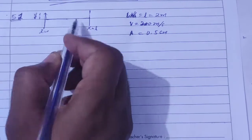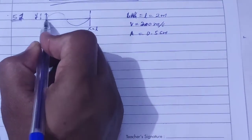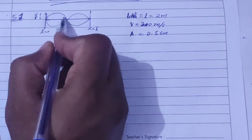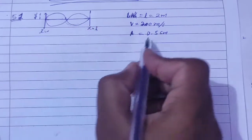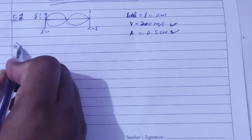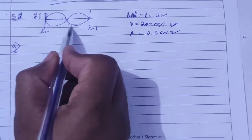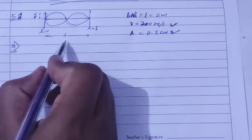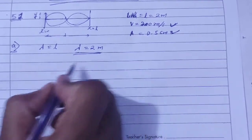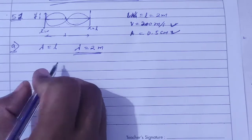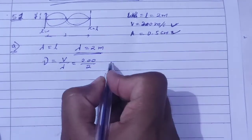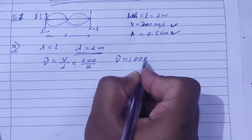Here is a node, here is a node, here is a node — this is a standing wave system. Now, first wavelength: for the first overtone on a 2-meter string, lambda equals 2 meters. Second, frequency equals speed divided by lambda: frequency equals 200 divided by 2, so frequency equals 100 Hz.